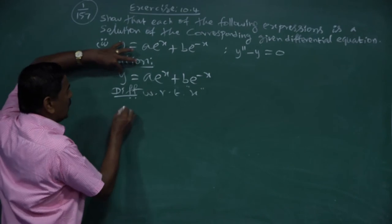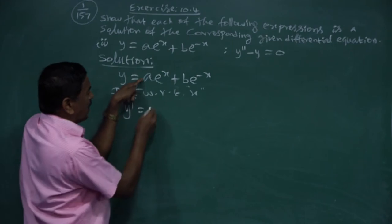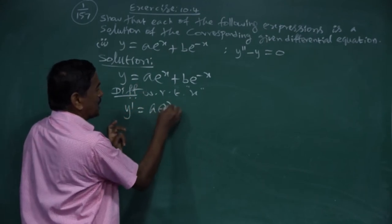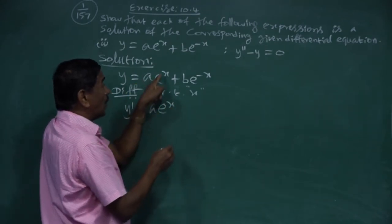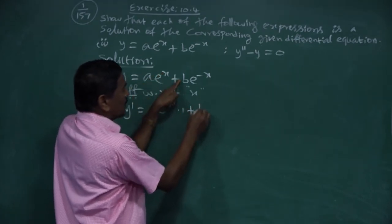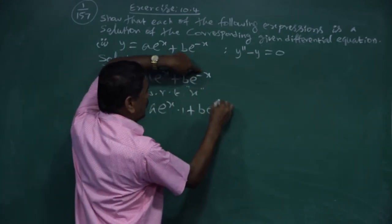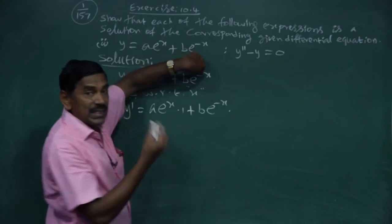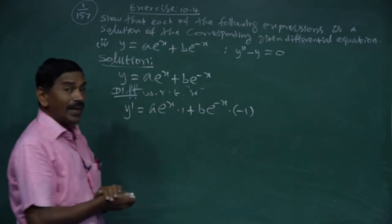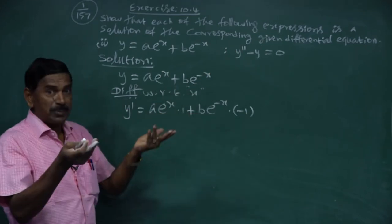Differentiating y = a·e^x + b·e^(-x) with respect to x: y' = a·e^x·(1) + b·e^(-x)·(-1). Now differentiating again with respect to x to get y''.